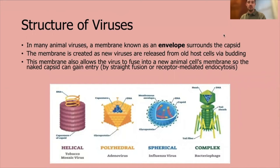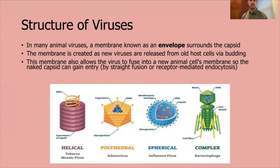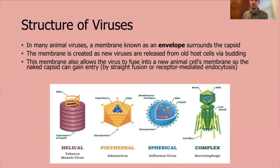Many animal viruses have a membrane known as an envelope surrounding the capsid. We have a few different shapes: helical — like the sheath of a bacteriophage, with the tobacco mosaic virus as an example; polyhedral — like the head of the bacteriophage, with adenovirus as an example; and spherical — like coronaviruses or the influenza virus. The spherical virus is surrounded by a membranous envelope with glycoprotein spikes sticking outside. You can see just how much more complex the bacteriophage's structure is compared to any of these three.